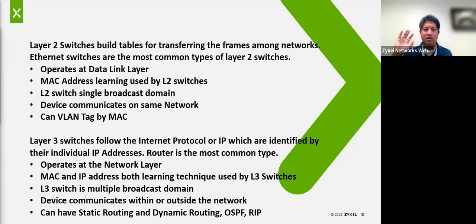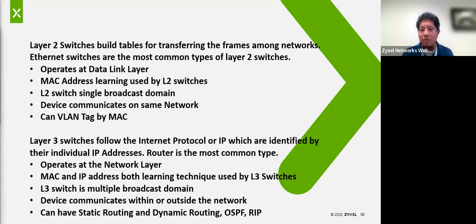Think of Layer 3 as more about routing — either routing of VLANs or routing of IP addresses within a network. Those are what static routes and dynamic routes are. By show of hands, how many of you know what static routing and dynamic routing in a switch is?